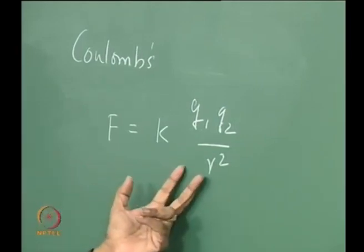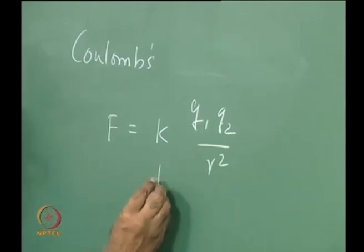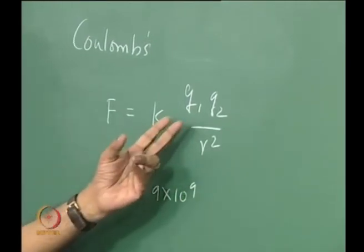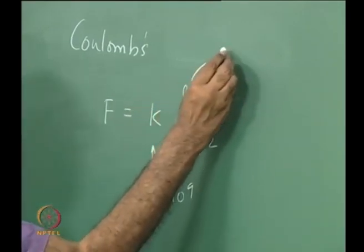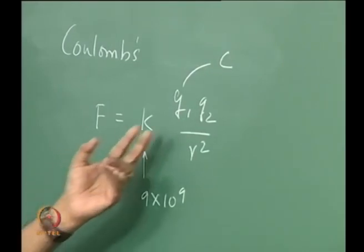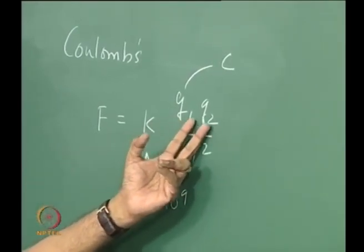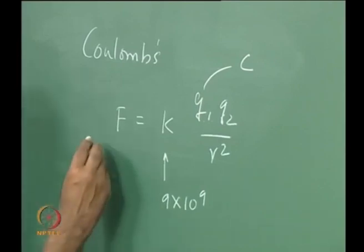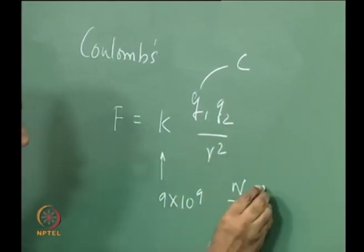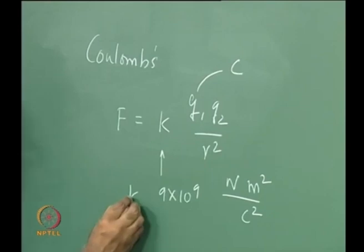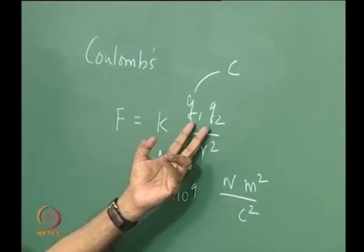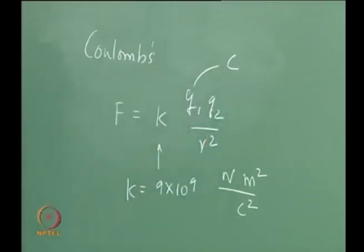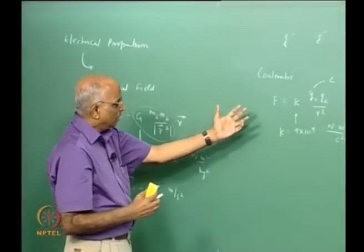Let us get some feel for this. If you do a series of experiments or derive it, the value of k works out to be 9 × 10⁹. Now I need units for charge — the unit for charge is Coulomb (C). Two like charges of q₁ and q₂ will repel each other; unlike charges attract. The force is equal to Newton, r is in meter, divided by Coulomb squared — that is the value of k. This tells us the attraction or repulsion between two charges q₁ and q₂. This is Coulomb's law.